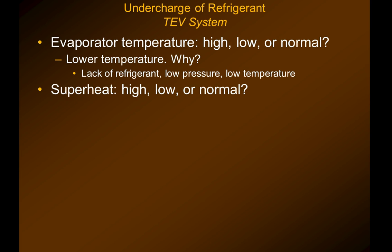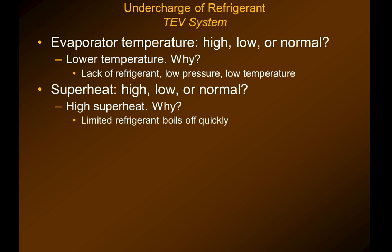Superheat — is it going to be high, low, or normal? We know that TXVs maintain superheat over a wide range of conditions. However, in a refrigeration system there's not a lot of refrigerant, so many times the TXV is not going to keep the superheat at a normal level. Very little refrigerant leaking out of the system is going to cause the TXV not to be able to regulate that. So you're going to have higher superheat because there's a limited amount of refrigerant in the system.